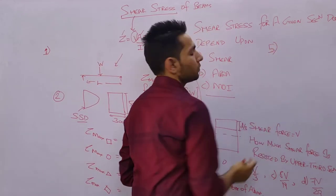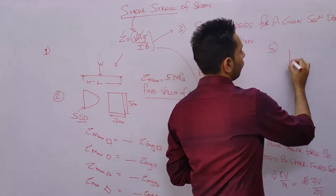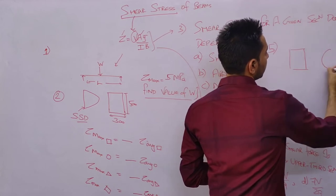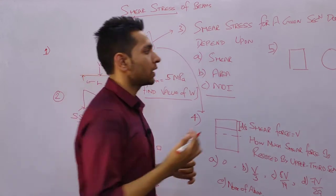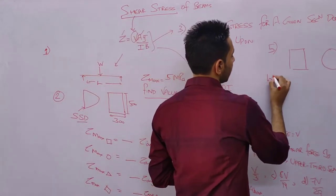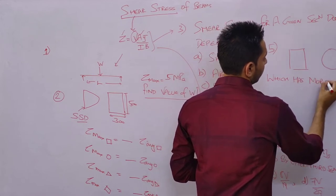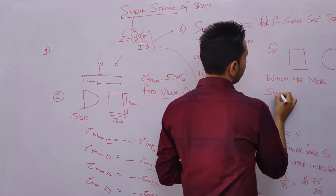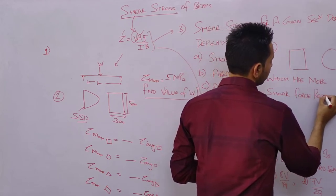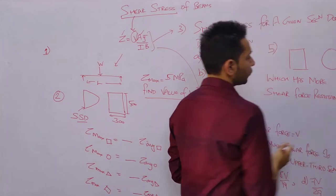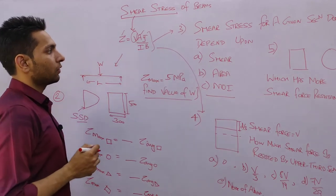The fifth type of question gives you a rectangular section and a circular section, and you have to determine which of these sections has more shear force resistance. These kinds of questions are also asked in the exam.